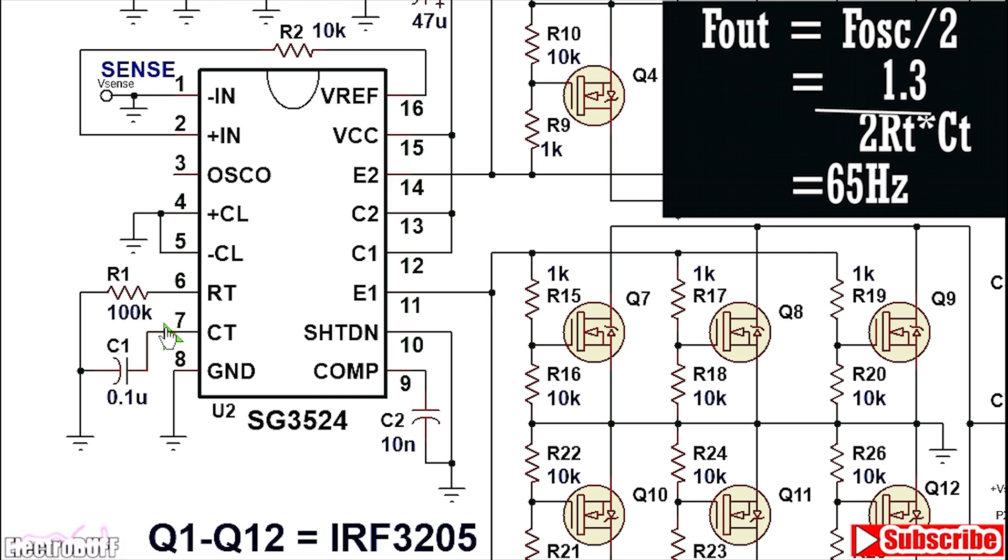The frequency is set by the timing resistor R1 and the timing capacitor C1. These are connected to RT pin 6 and CT pin 7 respectively as shown. R1 is 100 kilo ohms and C1 is 100 nanofarads or 0.1 microfarads. With these two values the oscillator output frequency will be about 130 hertz.